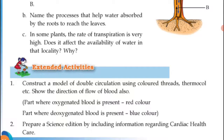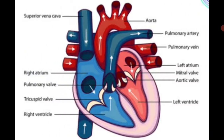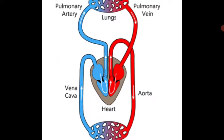This is the part where the oxygenated blood is present. This is carbon dioxide. I will show you the part where the oxygenated blood is present. As you can see, the oxygenated blood is present.